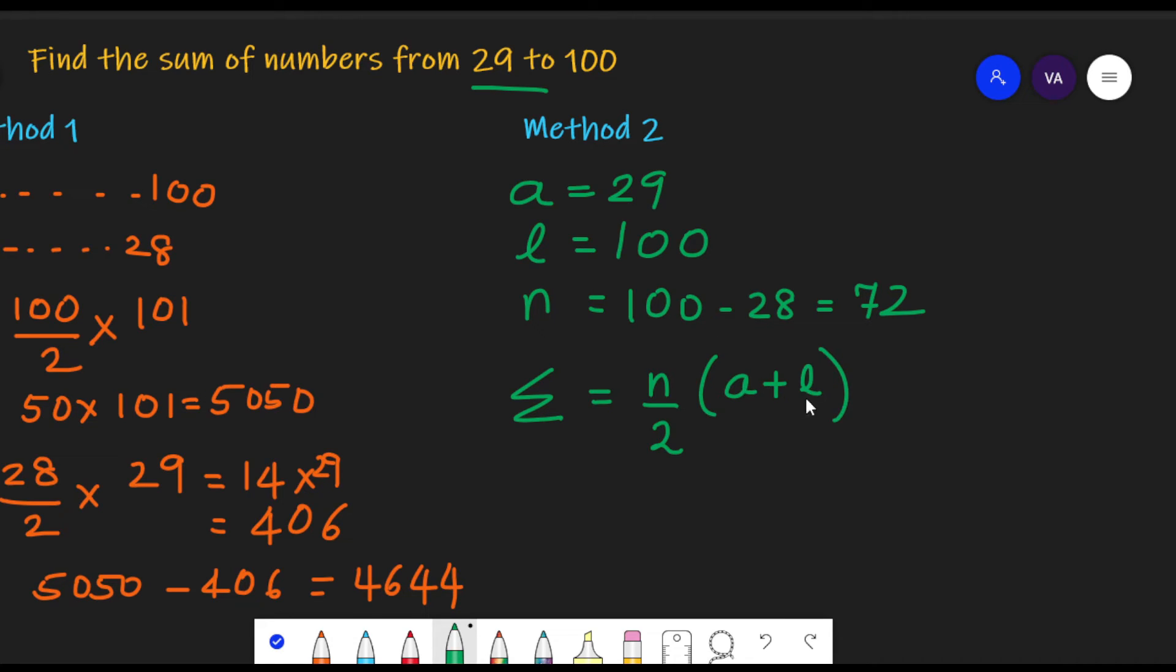Before that we had n plus 1, because the first number was 1, and the last number was n. But here the last number is not n, because number of numbers is different here. So l is the last number, which is 100, and a is the first number, which is 29.